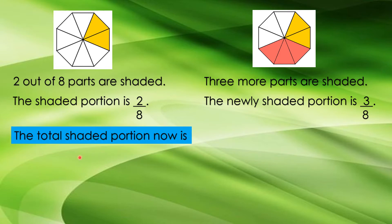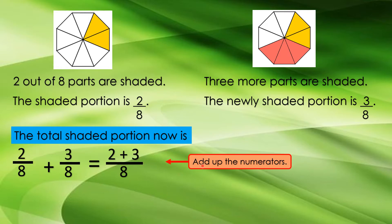The newly shaded portion is 3 eighths. So, the total shaded portion now is, let's add, 2 eighths plus 3 eighths equals, what do you think? 2 plus 3. You are going to add up the numerators. Then, maintain the denominators.